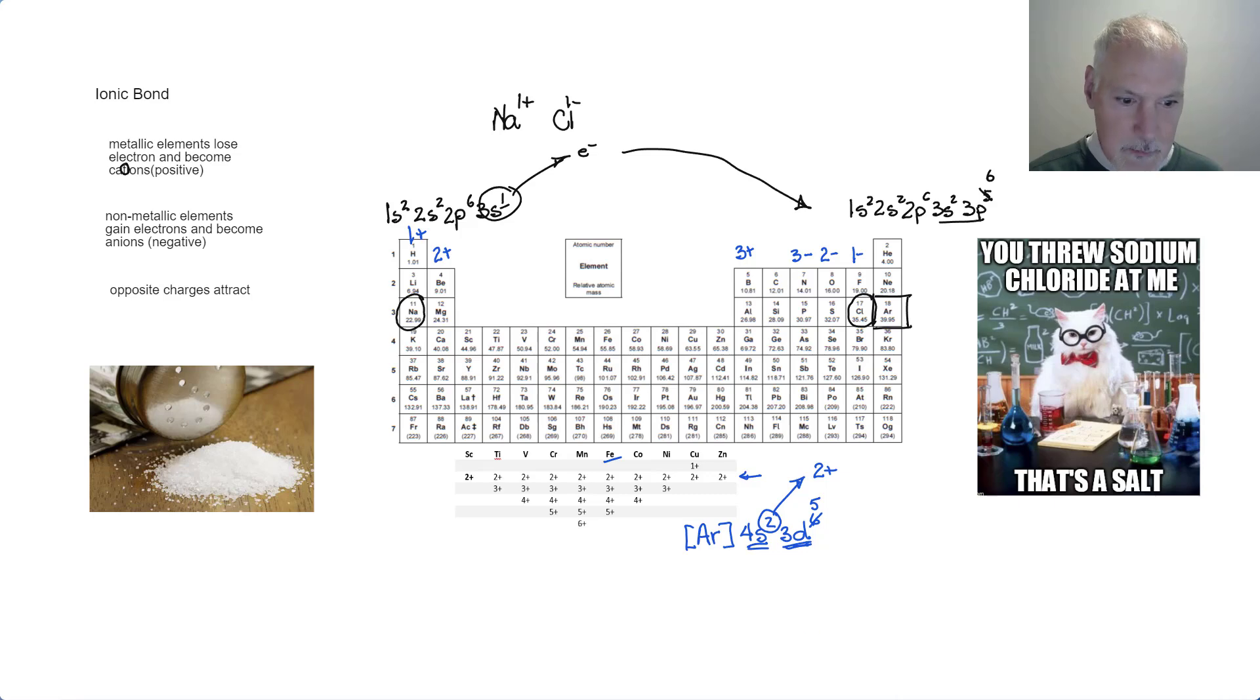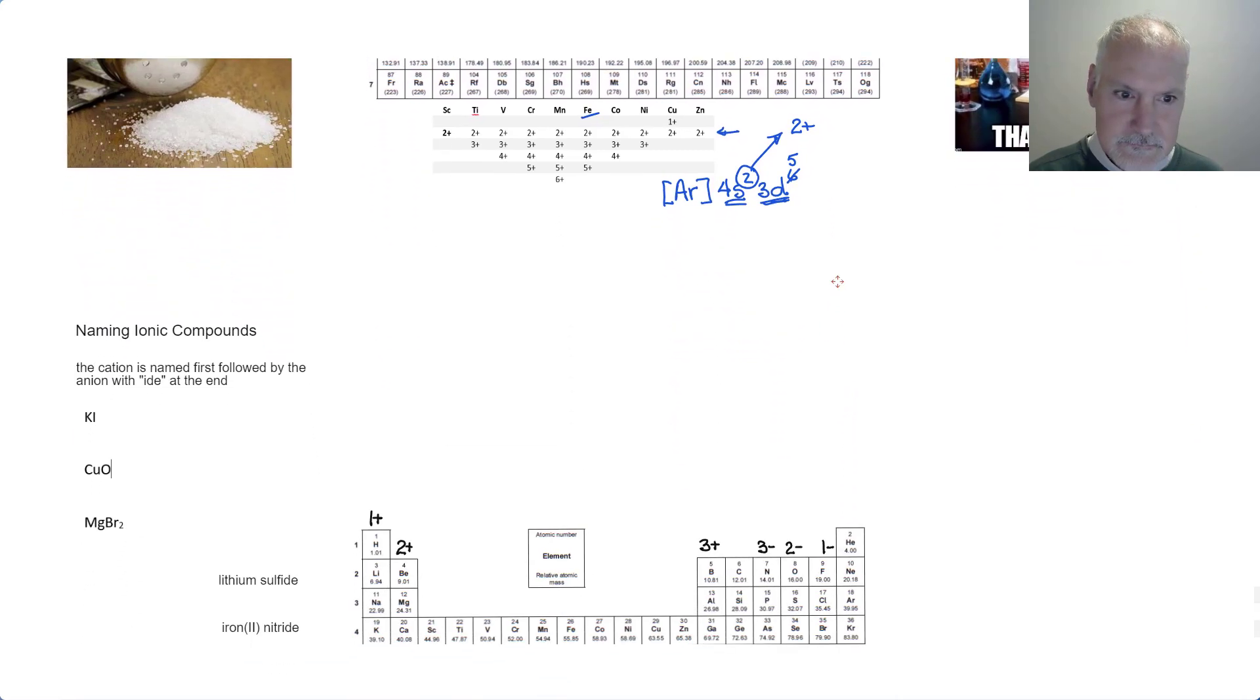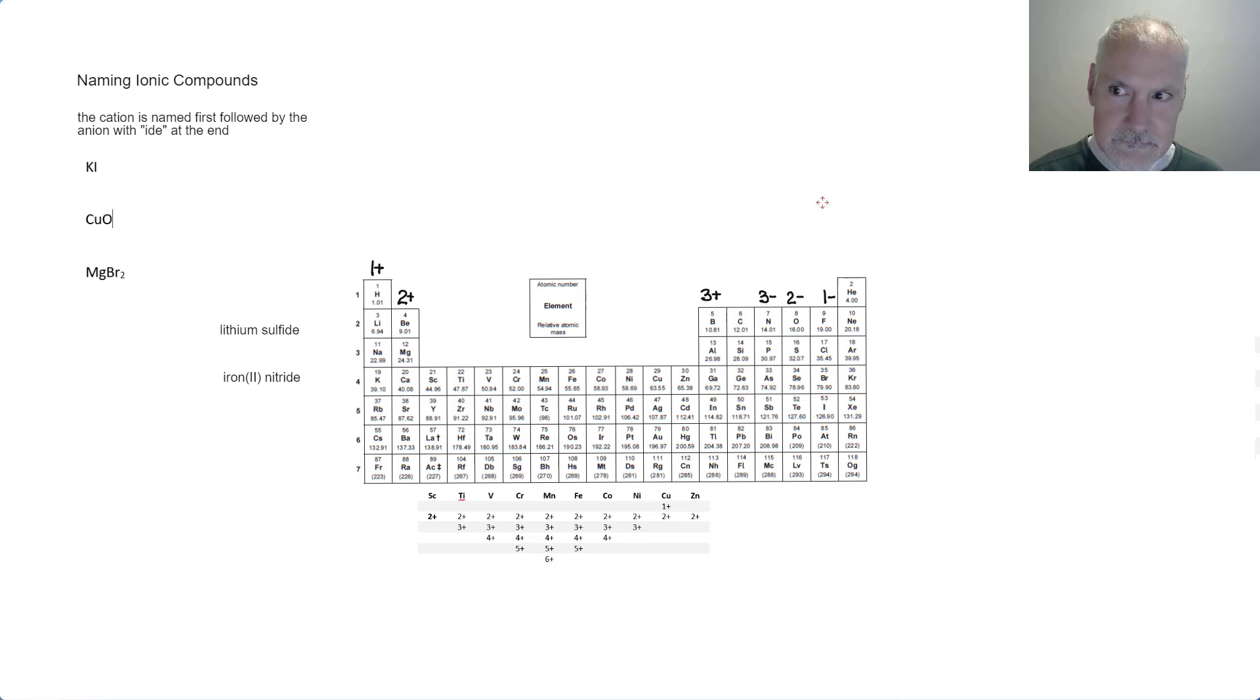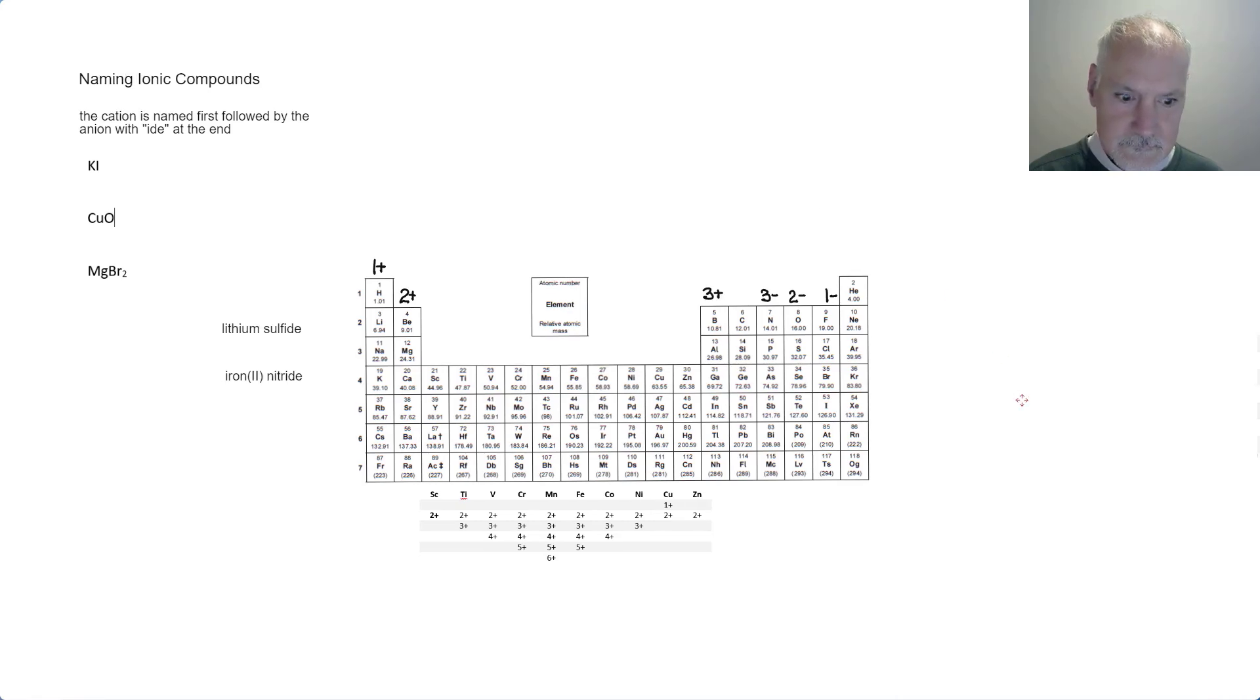Let's take that now and look at how we name some of these compounds. Our general rule is we name the cation first, followed by the anion, finishing in -ide. So for instance, the first example I'll go through here, K is potassium combined with iodine, so that would become iodide, to finish with the -ide.